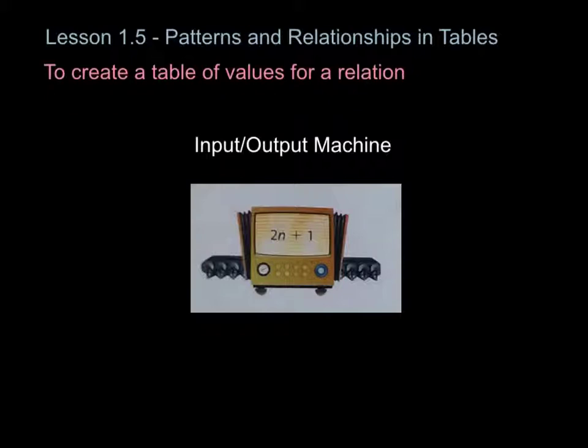So we're going to start, and I think this should be a review from grade 6, the input and output machine. An input-output machine represents a relation. In this case, our relation here is 2n plus 1, where n is related to 2n plus 1. As a review, the way an input-output machine works is this side on the left is what you input into the relation, and then your output is the solution or the answer to that expression.